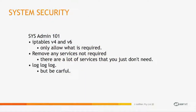Some basic sysadmin 101: turn on the firewalls on the DTN servers, V4 and V6, only allow what's required. Remove any services that aren't required — if you're just using Aspera, there's only a few ports you need open; turn everything else off. Log everything. One warning with logging: we had one experience where a user had 31 terabytes of 10K files, and when throwing that many file opens and closes across the internet, we were actually crashing logd in Unix just from reporting. So make sure logging doesn't kill the machine doing the transfer.